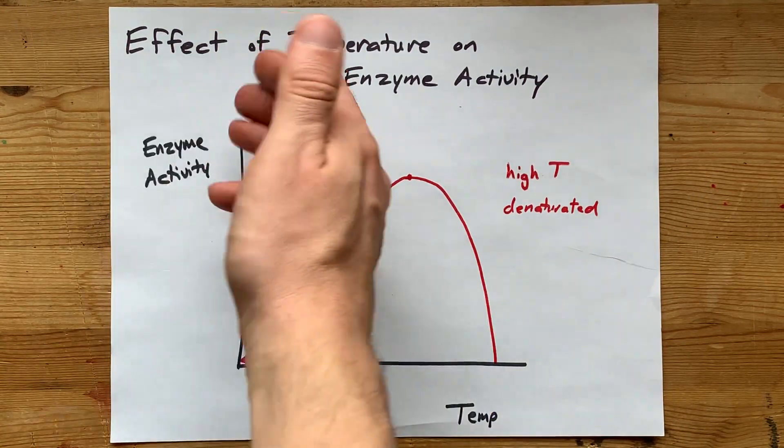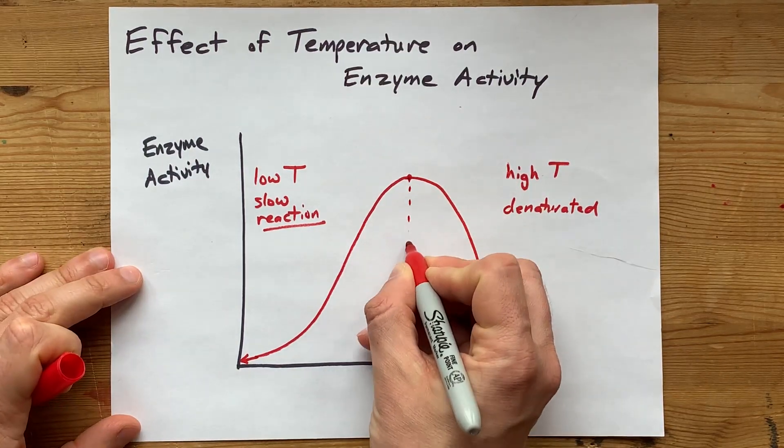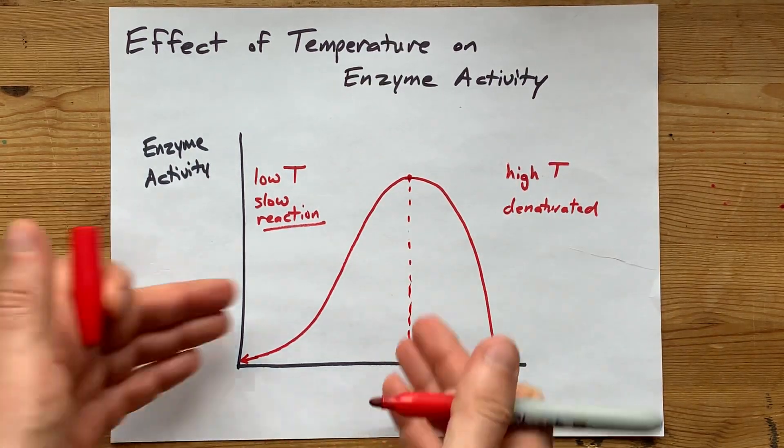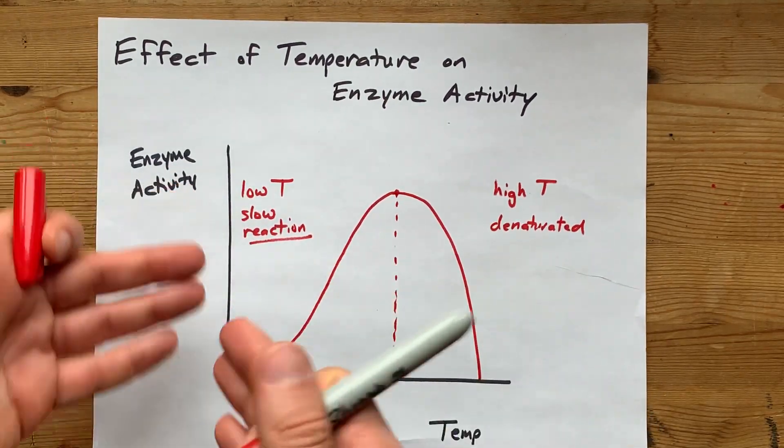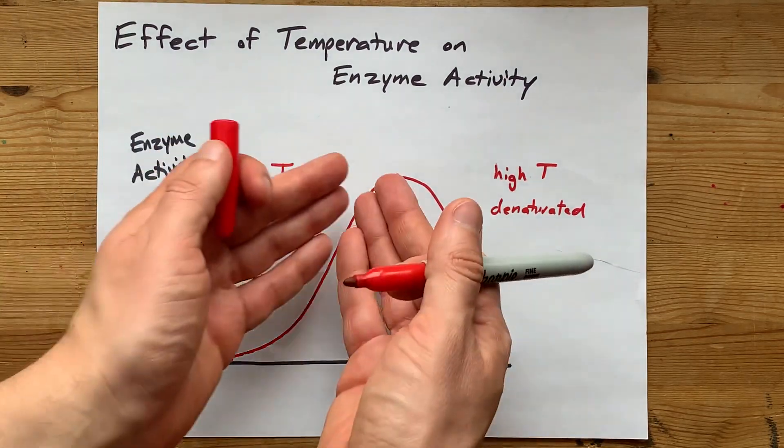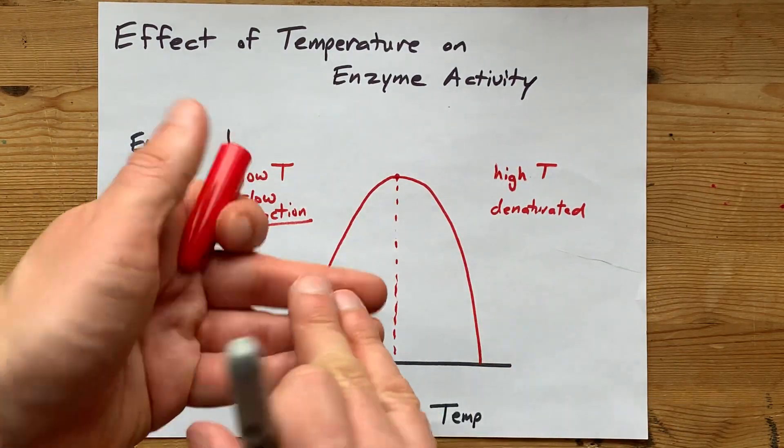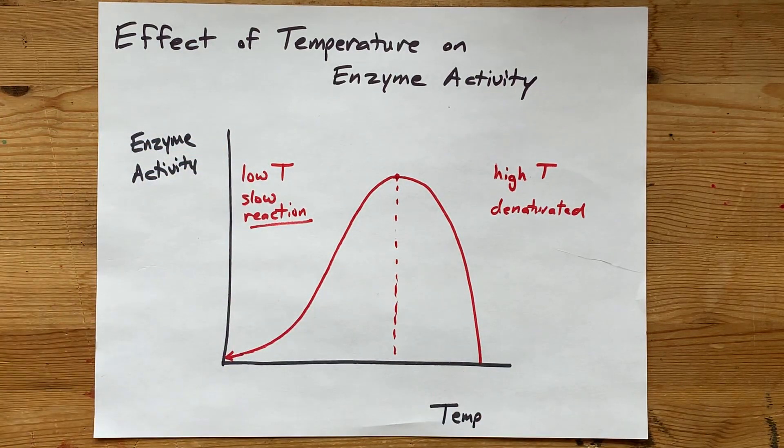But again, the effect of temperature is that there's an optimal temperature for the enzyme, where it works best. And then if you get too cold, the molecules are moving less quickly, and so your reaction slows. If your temperature is too high, the enzyme itself breaks down, and it can't be active because it's been broken apart into pieces.